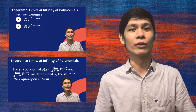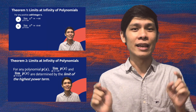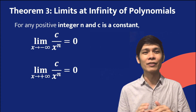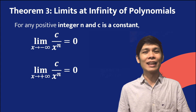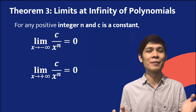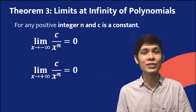But before we continue with this video, please watch the video on the first two theorems. You can find the links in the description. Theorem number three states that for any positive integer n, where c is a constant, the left-hand limit and right-hand limit of c over x raised to n are zero.